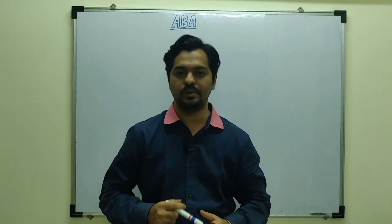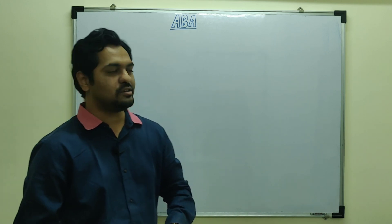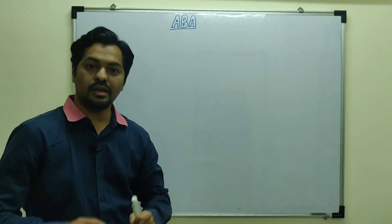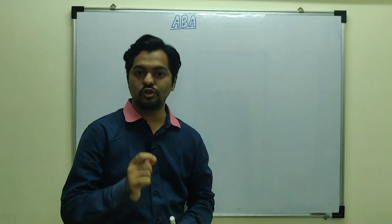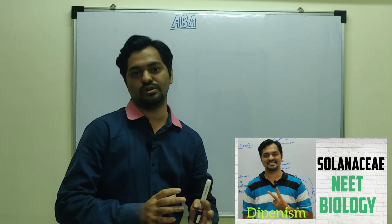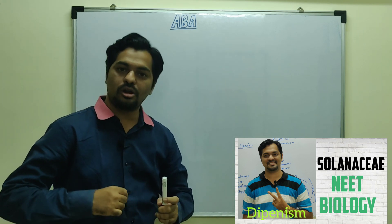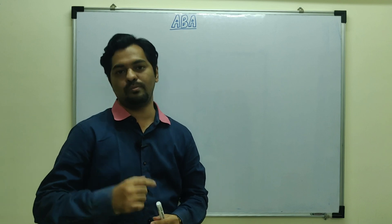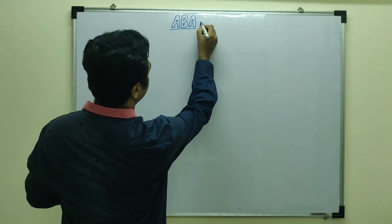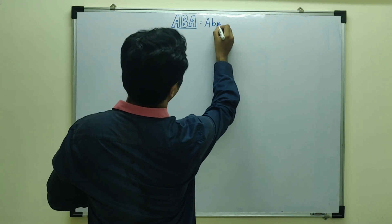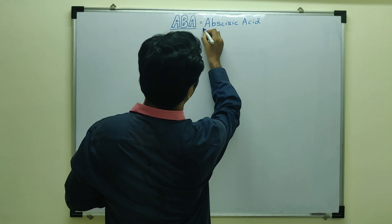Ethylene has some growth promoting activities too. Now the fifth and final plant hormone is ABA. ABA is specifically a plant growth inhibitor. In MCQs, if asked for the inhibitory hormone, mark ABA. If both ethylene and abscisic acid are options, you can mark both. ABA stands for abscisic acid.